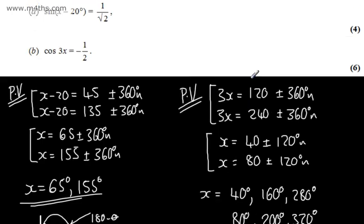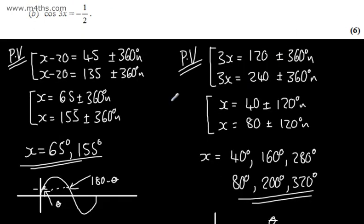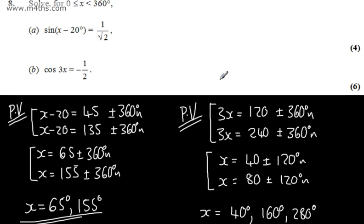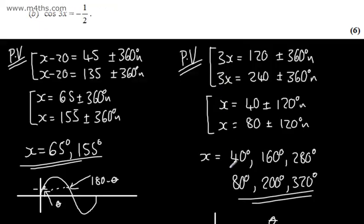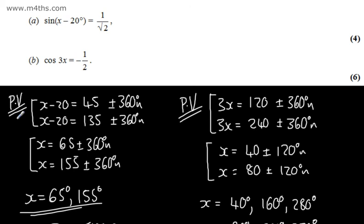So for 10 marks in total: part A gives x = 65 degrees and x = 155 degrees, and part B gives x = 40, 80, 160, 200, 280, and 320 degrees.